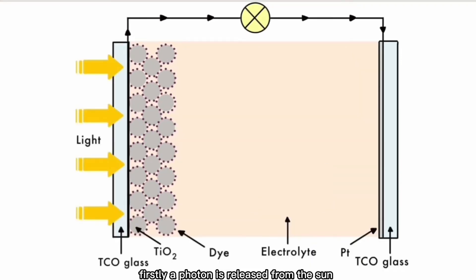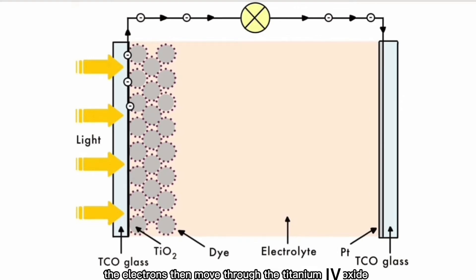Firstly, a photon is released from the Sun which hits the dye. This causes the dye to eject electrons from its conjugated bond into the conduction band of titanium dioxide. The electrons then move through the titanium dioxide nanoparticles, exit the anode, and move through the external circuit.